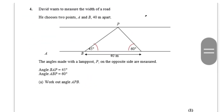Next question: David wants to measure the width of a road. He chooses two points A and B 40 metres apart. The angles made with lamppost P on the opposite side are measured — angle BAP equals 45° and angle ABP equals 60°. Part A says work out angle APB. The angles in a triangle add up to 180°, so APB = 180 − 60 − 45 = 75 degrees.